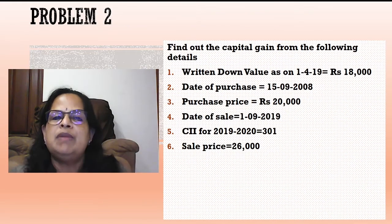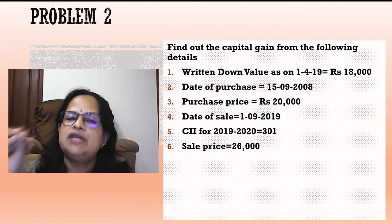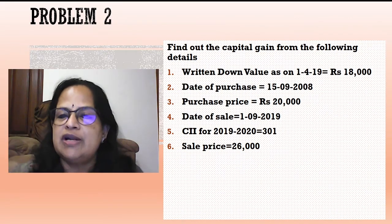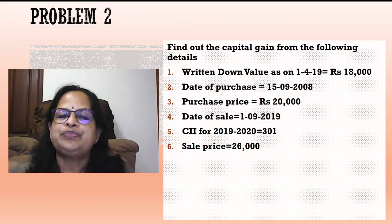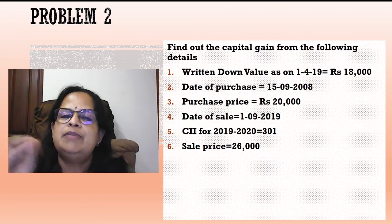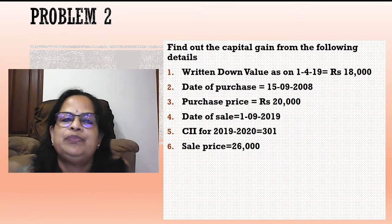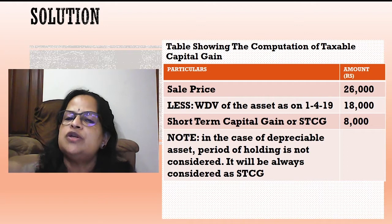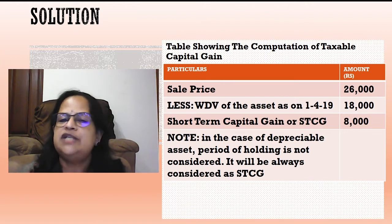Problem 2: Written down value (WDV) as on 1 April 2019 = ₹18,000. Date of purchase: 15 September 2008; purchase price ₹20,000. Date of sale: 1 September 2019; CII for 2019-20 = 301; sale price = ₹26,000. Computation: Sale price ₹26,000 less WDV ₹18,000 = ₹8,000 short-term capital gain. Even though the period of holding would make it long-term, since it is a depreciable asset it is always short-term capital gain.